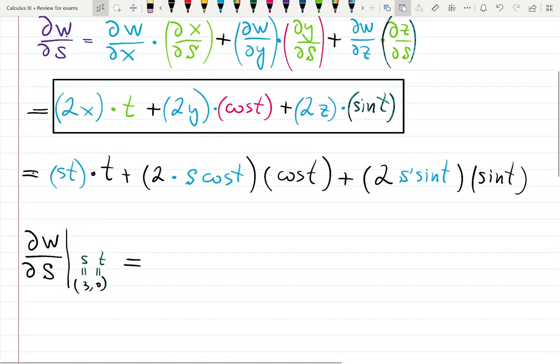You can simplify that as well but since we're plugging 3 and 0, many things will be zeros anyways. But if you want to, it will be ST² + 2S cosine²T + 2S sine²T.